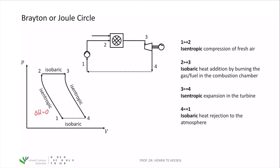Second, we are in the combustion chamber, where we add the natural gas. The air is at a higher pressure — we've increased the pressure in the compressor. Now within the combustion chamber, we add heat in an isobaric process, meaning at a constant pressure. Then we have the burnt gas-air mix which can run through the turbine. Isobaric means P is constant.